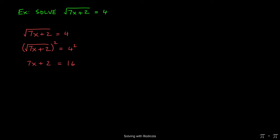When we do, the square and the square root, because they're inverse operations, cancel each other out, and we're left behind with just 7x plus 2 on the left-hand side. 4 squared on the right gives us 16.